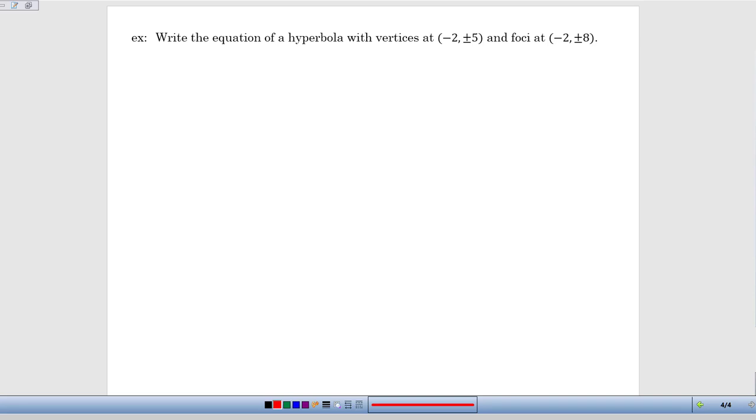Our last example has us trying to write the equation of a hyperbola having been given some information about its features. So we are told that the vertices are at (-2, ±5) and our foci are at (-2, ±8). So from that information we want to piece together the equation of our hyperbola.